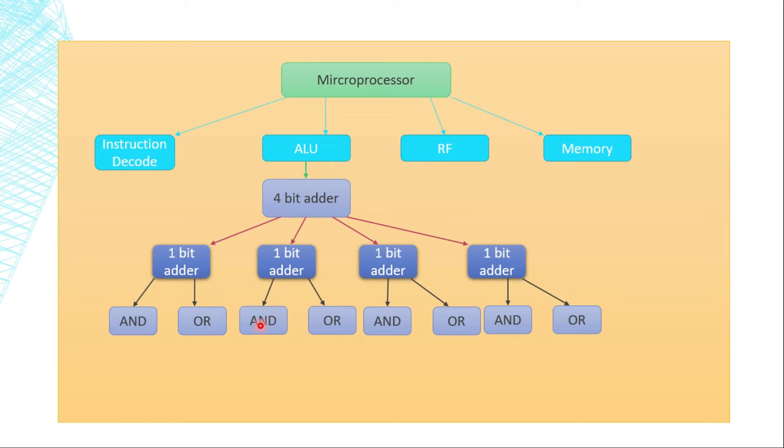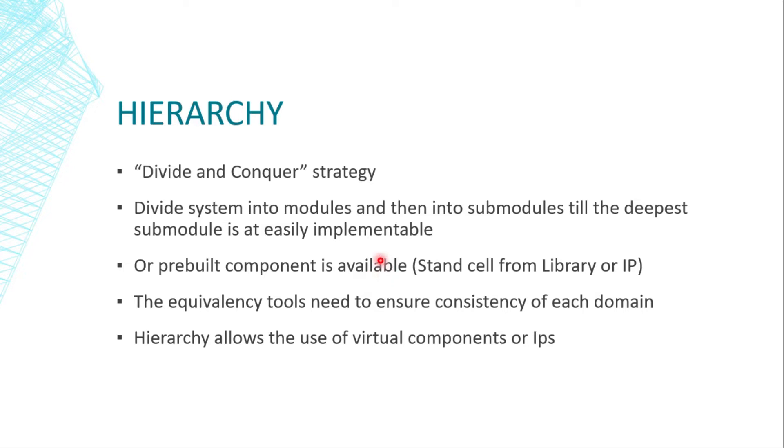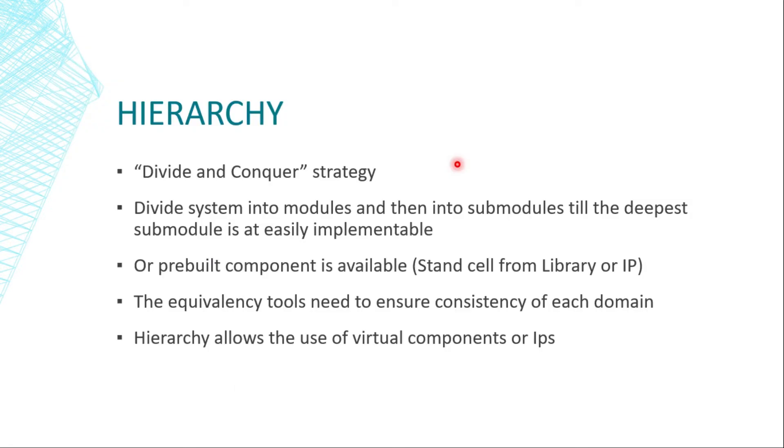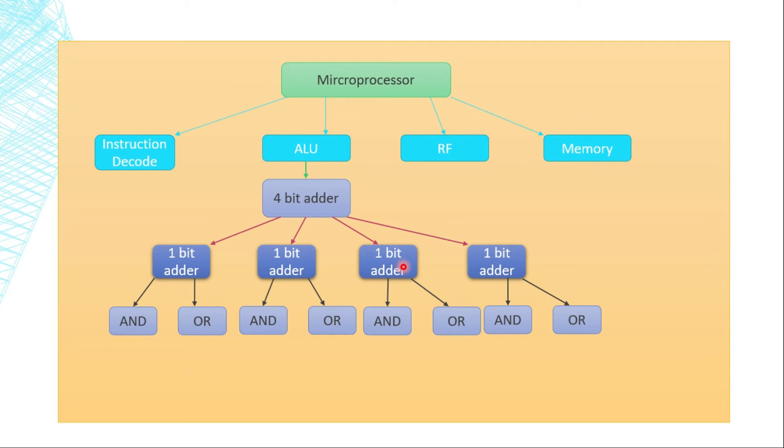Almost all the design that happens today in the industry is basically gate-based, standard cell-based. So, these gates are usually pre-built. The deepest sub-module is either easily implementable or there should be a pre-built component available. The gates are part of library, which we call standard cell library. But these can also be IPs. You can buy an entire ALU and directly incorporate it inside your microprocessor or the register file. The equivalency tools need to ensure the consistency of each domain.